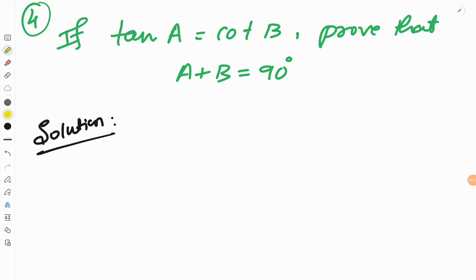The next problem which you are seeing on the screen is a very simple problem. If tan A equals cot B, prove that A plus B equals 90 degrees.